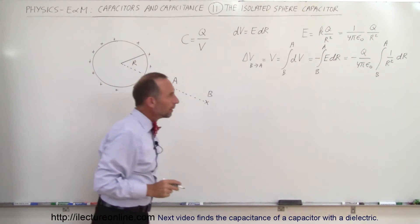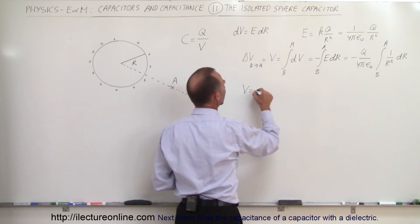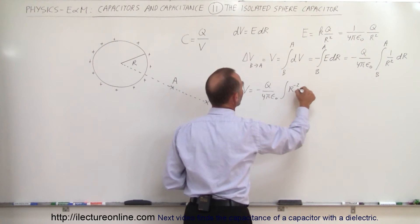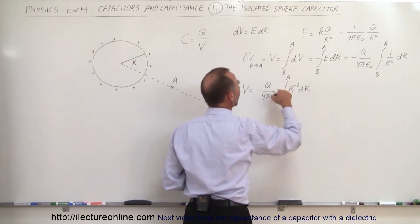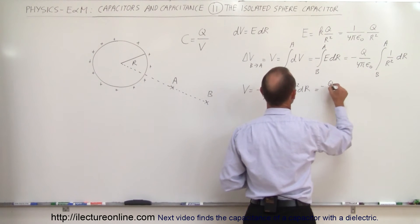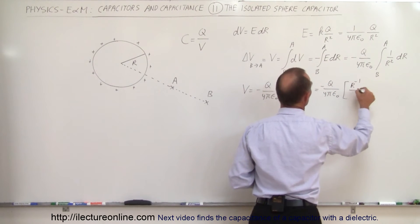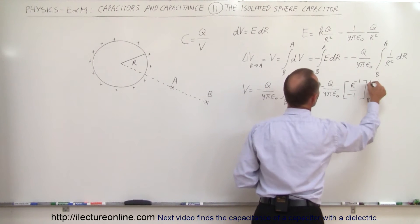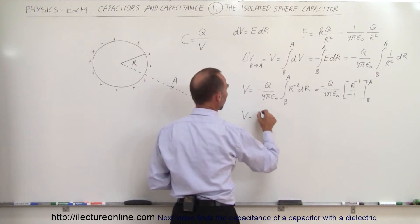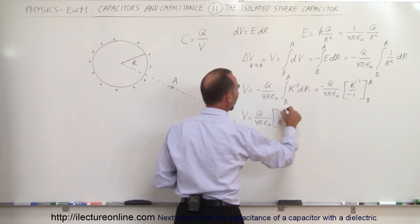To integrate more easily, we write this as: V equals minus Q over 4πε₀ times the integral of R to the minus 2 dr, from B to A. We add one to the exponent and divide by the new exponent, giving R to the minus 1 over minus 1, from B to A. The two minus signs cancel, so the potential equals Q over 4πε₀ times 1 over R, evaluated from B to A.